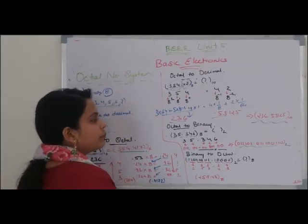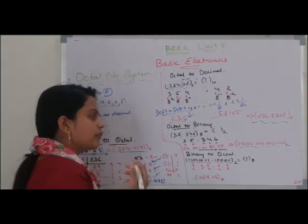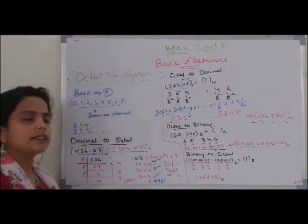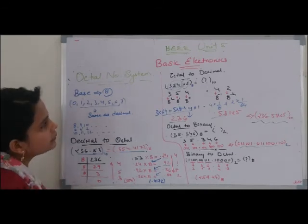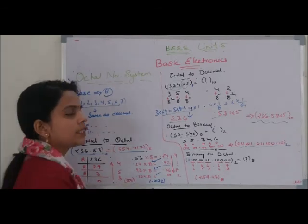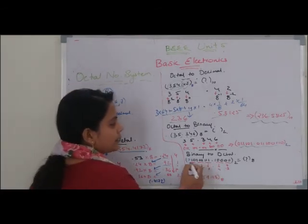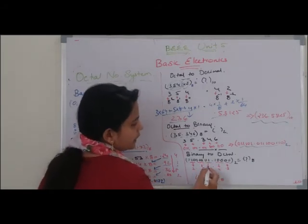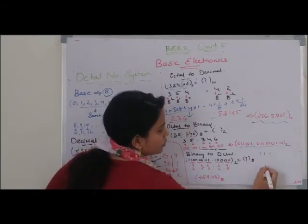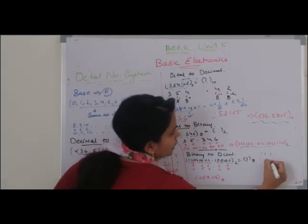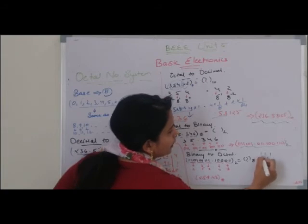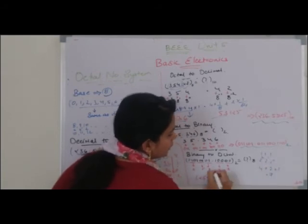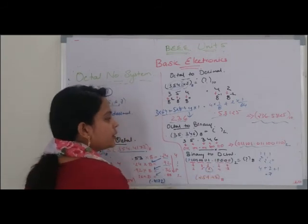3-3 की pairing बनाने के बाद हम individual pairs को convert करेंगे — binary से decimal में जैसे last video में बताया था। For example, if we have 111: 1 into 2 to the power 0 = 1, plus 1 into 2 to the power 1 = 2, plus 1 into 2 to the power 2 = 4. Four plus two plus one equals seven. So 111 binary = 7 in octal. Similarly we convert all pairs and combine them to get the final answer.